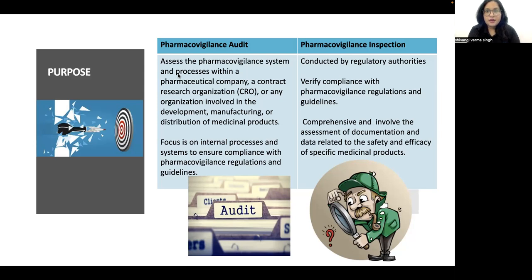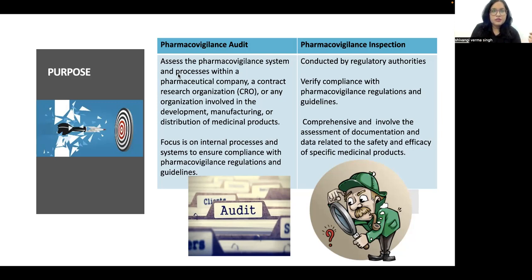Now we'll discuss what is a pharmacovigilance inspection. It is conducted by regulatory authorities to verify compliance with pharmacovigilance regulations and guidelines. It is comprehensive and involves the assessment of documentation and data related to the safety and efficacy of specific medicinal products. The key distinction is that the inspection is done by the regulatory authority, that is, the government of that country.